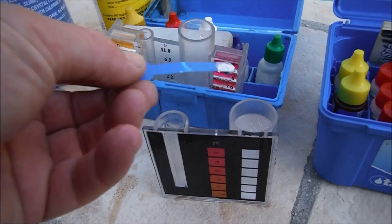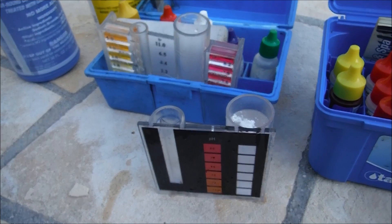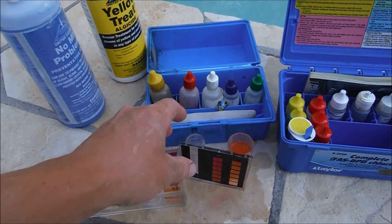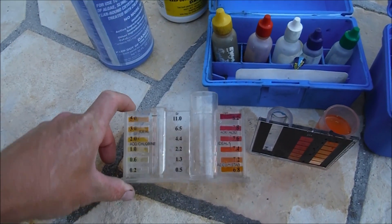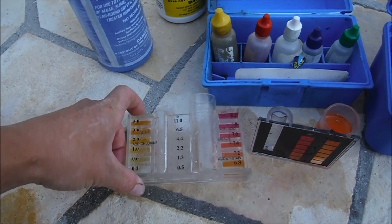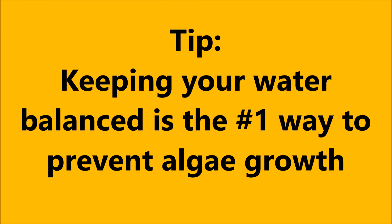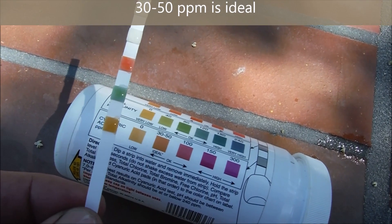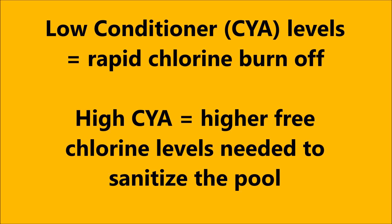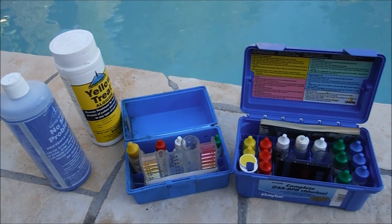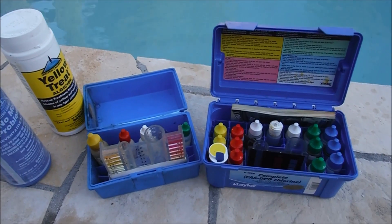One of the most common reasons why algae will grow is that your chlorine level has zeroed out in your pool. The number one way to prevent algae is having a balanced pool. You want to have a chlorine level of at least 2 to 3.0 at all times, especially in the summertime. Conditioner is a factor also — if you have too little conditioner in your pool, the chlorine will burn off too quickly. The best way to prevent algae growth is to keep a well-balanced pool all year long.